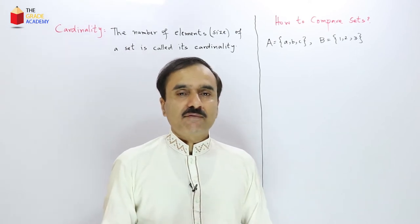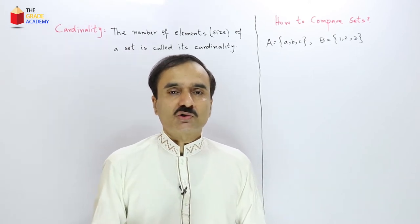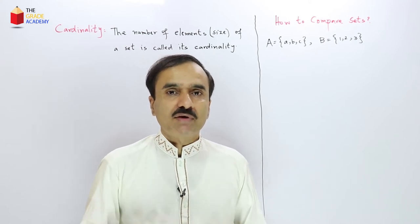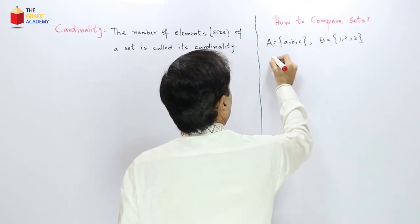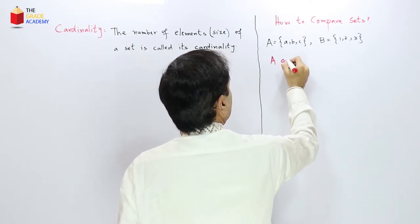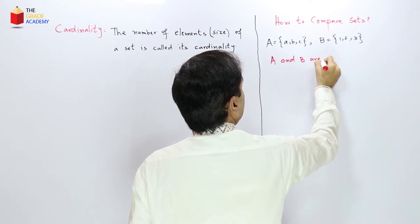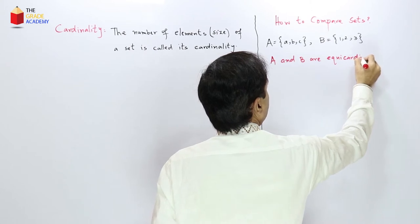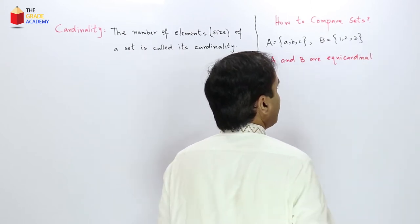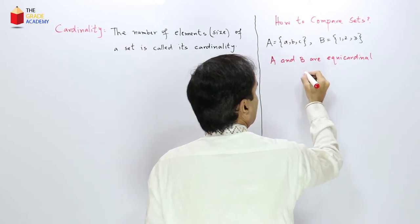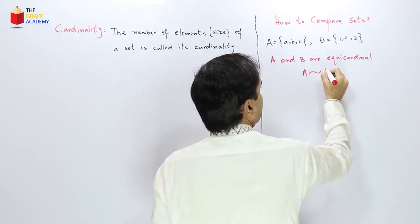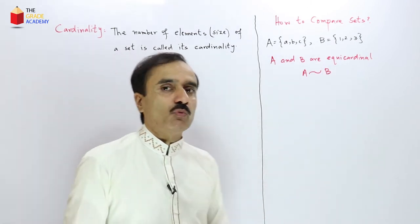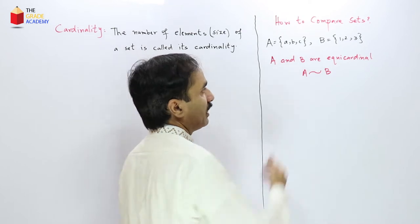We can say that set A and set B have the same cardinalities. The sets which have the same cardinalities are also called equal cardinal sets or equivalent sets. Here A and B are equal cardinal — they have the same cardinalities. We can use a symbol: A is equivalent to B, or A is equal cardinal to B.